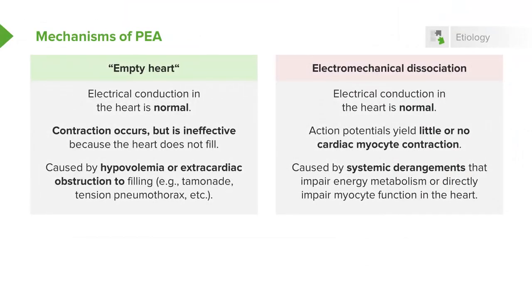Electromechanical dissociation, by contrast, is caused by systemic derangements that affect energy metabolism such that the heart can maintain normal conduction but cannot maintain the energy needed for mechanical contraction. As you can imagine, contraction requires far more metabolic energy than conduction, so it's going to be the first thing to fail in the setting of severe metabolic derangements.